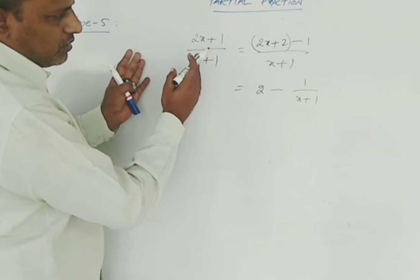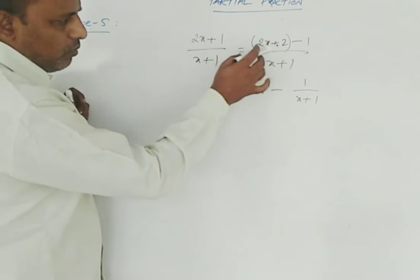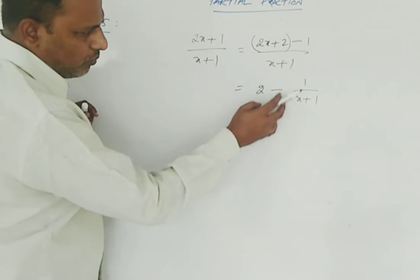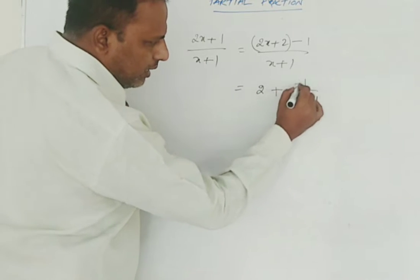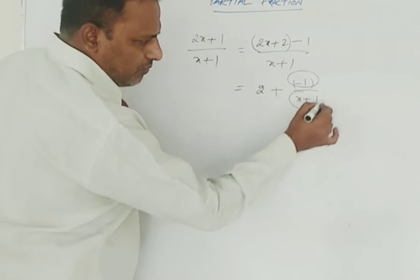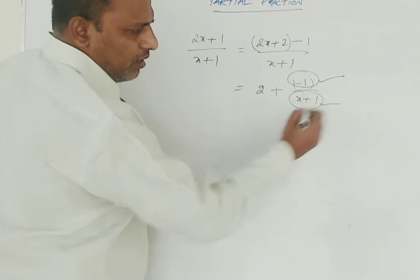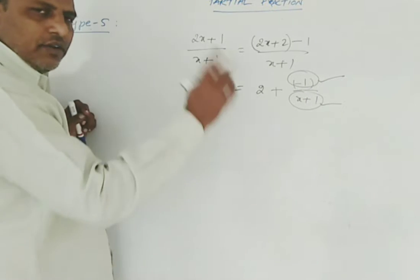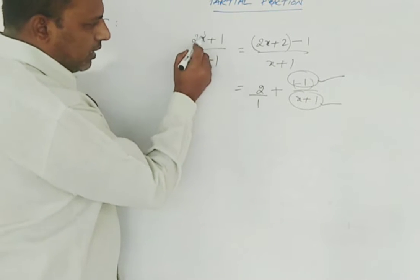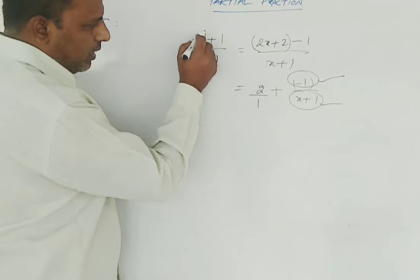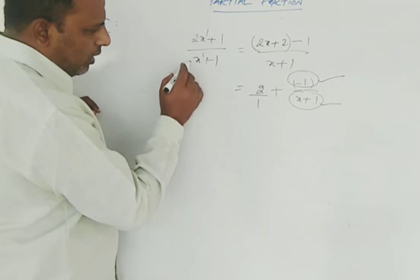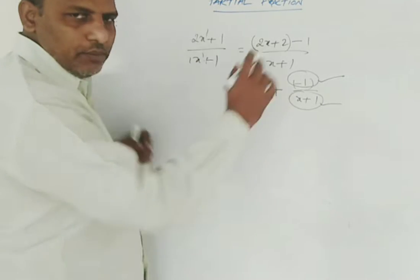Trying to split into rational fractions, we added and subtracted 1, giving us 2 minus 1 by x plus 1. Here r of x has degree less than the degree of g of x. The coefficient of the highest degree term in the numerator is 2 (degree 1, coefficient 2), and in the denominator it is 1 (degree 1, coefficient 1), so 2 by 1 plus r of x by g of x.